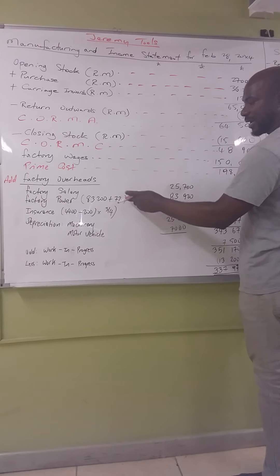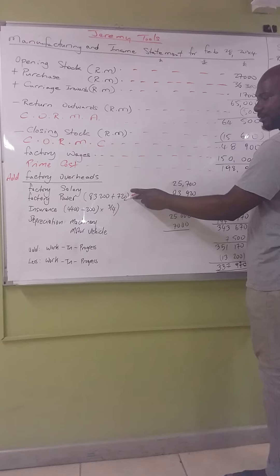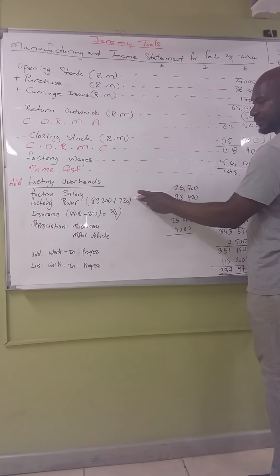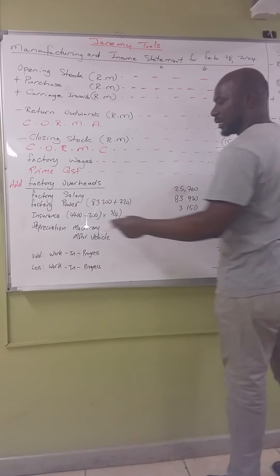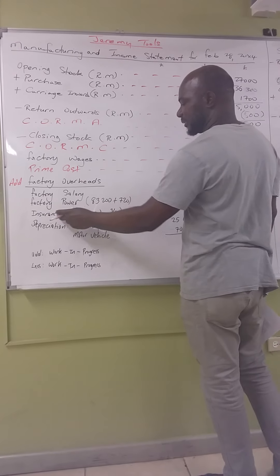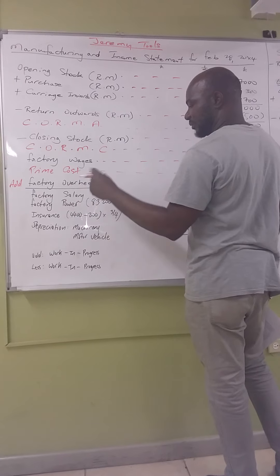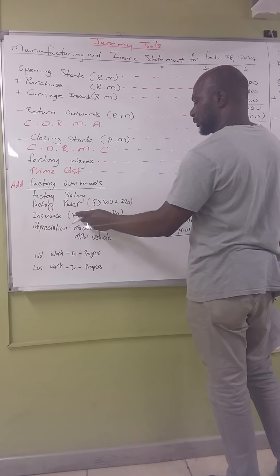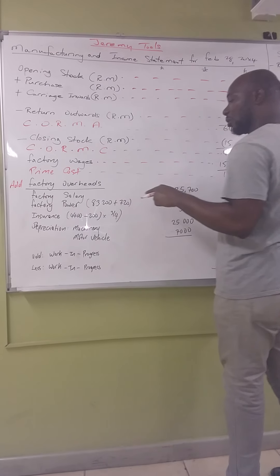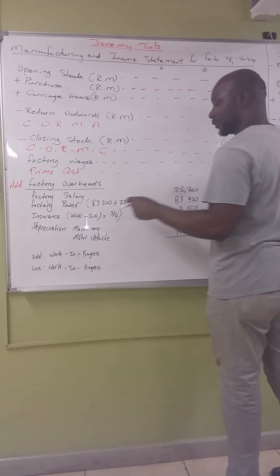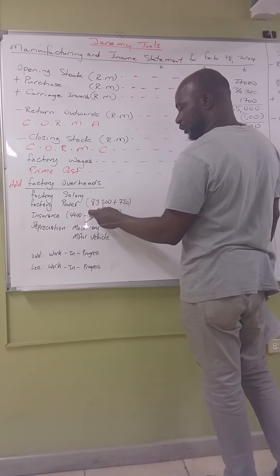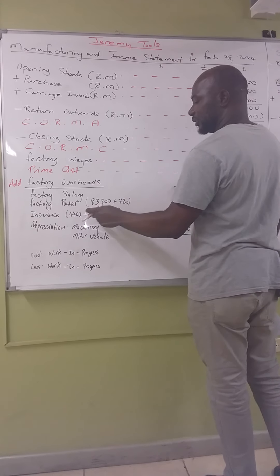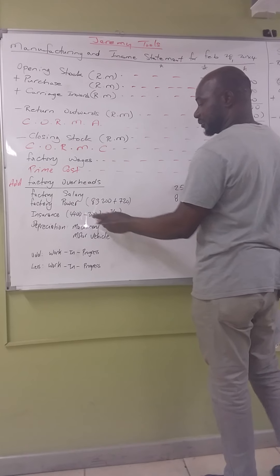You add the arrears, meaning the outstanding amount owing at the end of the year. Next, insurance from the question was 4,400, but insurance was prepaid by 200, so you make the adjustment: 4,400 minus 200 gives 4,200.